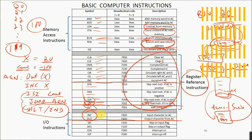Finally we have input/output instructions. We will discuss just INP and OUT for now; the remaining four instructions related to interrupts and flags will be discussed in detail when we cover interrupts in the PIC microcontroller. INP inputs a character and saves it to the accumulator; OUT takes the character from the accumulator and sends it to the output.